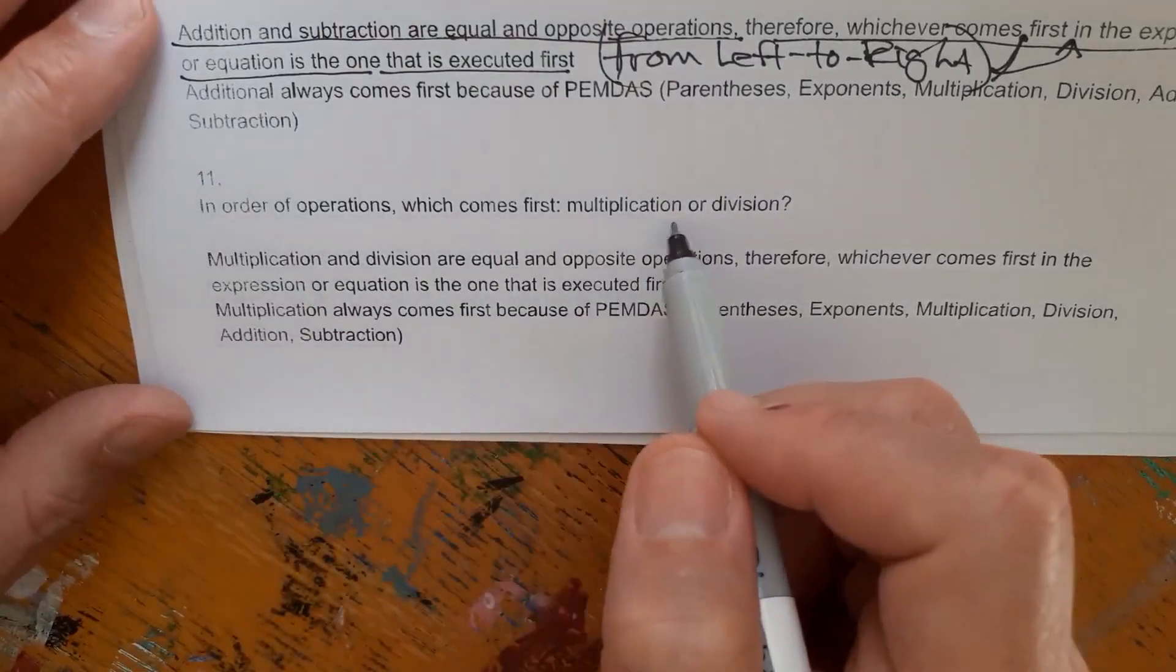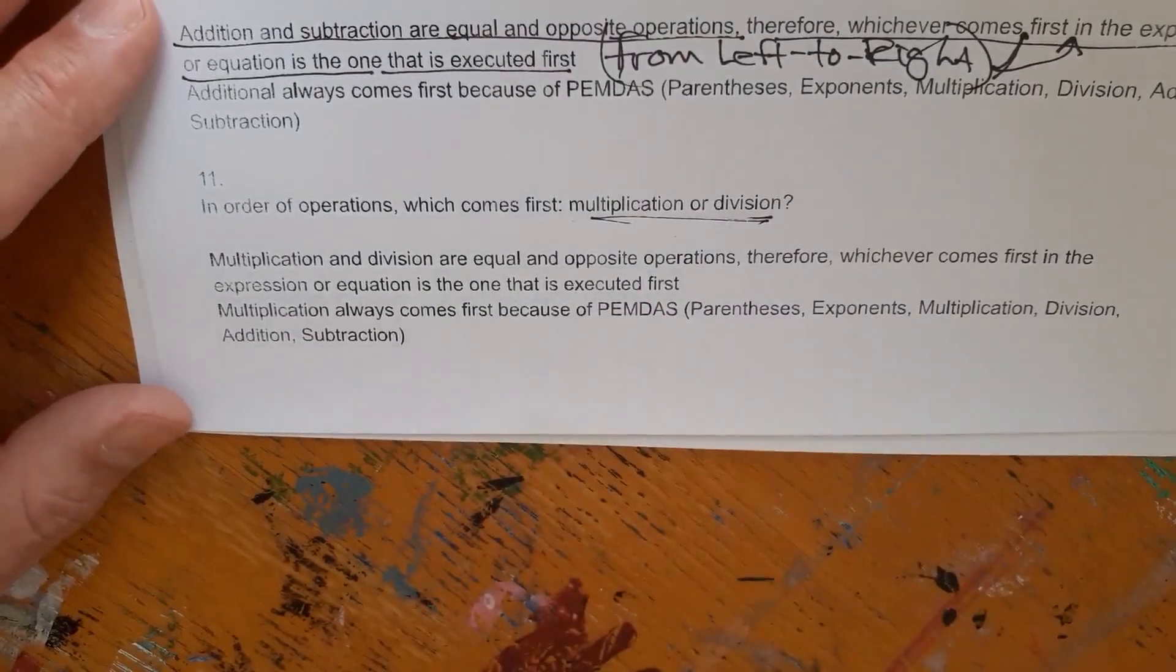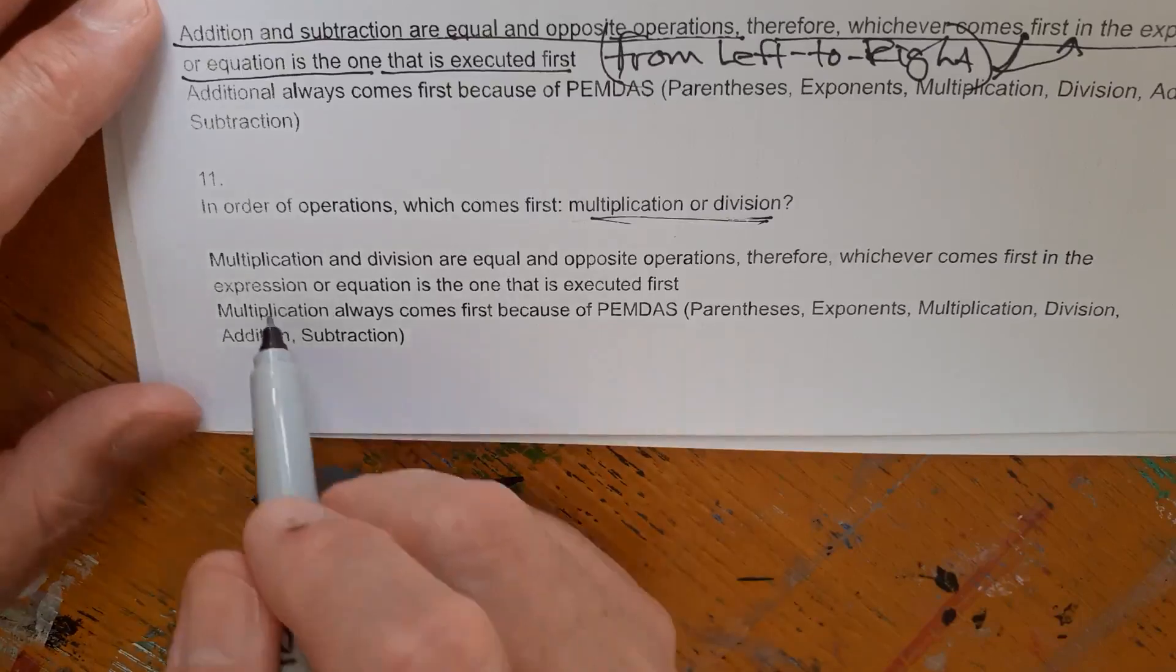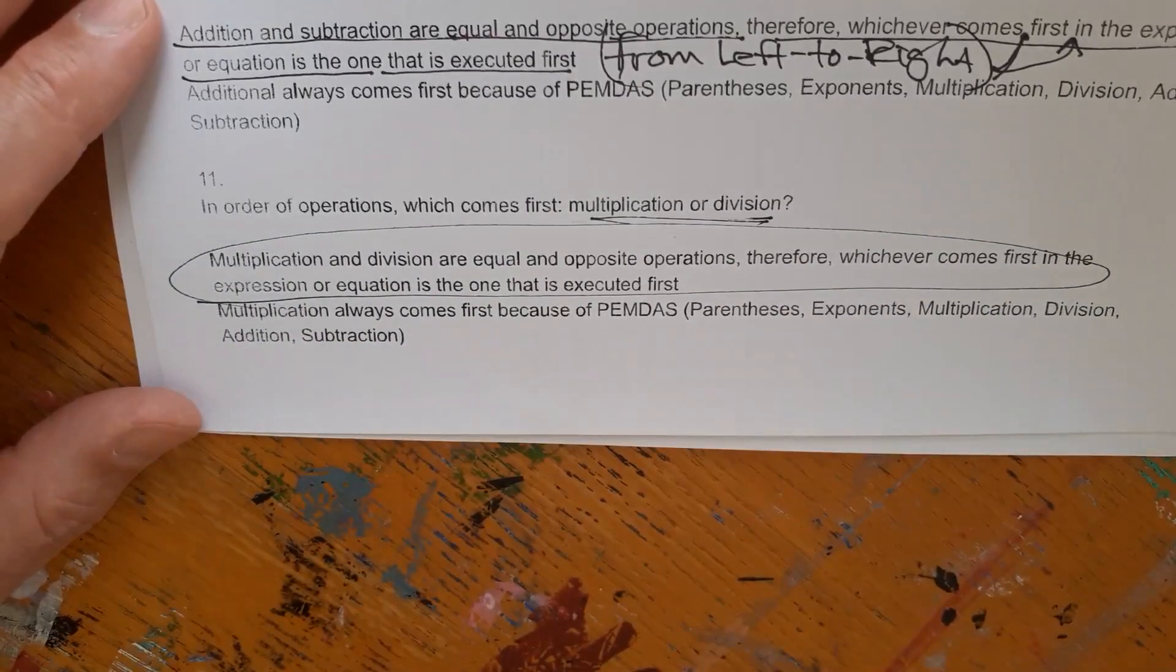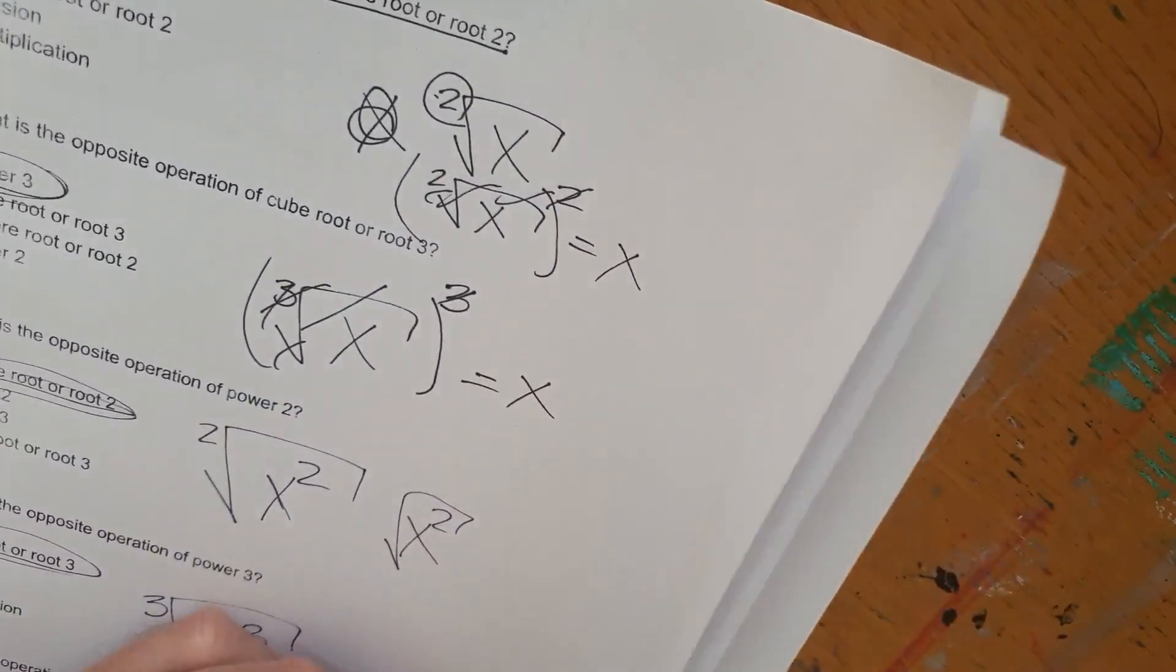In order of operations, which comes first, multiplication or division? Again, it's a trick question. Whichever comes first from left to right. So they're equal and opposite operations. So whichever comes first from left to right is the one you execute first.